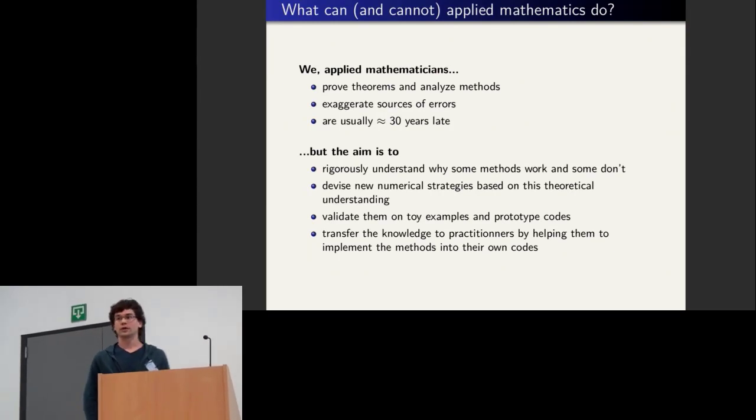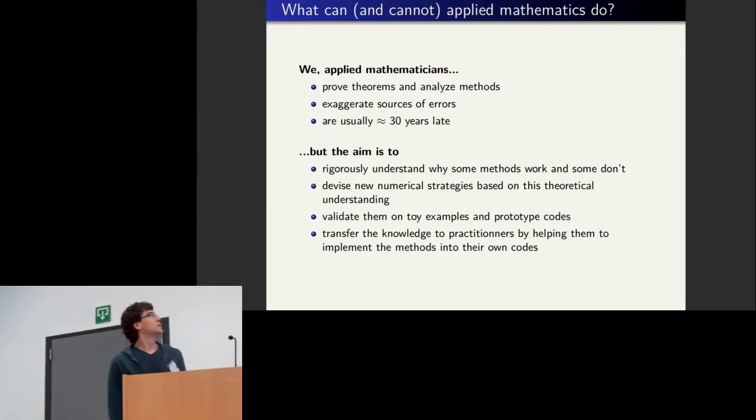So what can we and cannot we do as mathematicians? What we do is we prove theorems about numerical methods and models, and to do that we have to exaggerate sources of errors. We have to pick one particular kind of error and say this is the dominant contribution, even if it might not be actually relevant for applications. But we have to start somewhere, and it also means that we are usually 30 years late. What I'm going to present is basically stuff that has been worked out in the physical community in the 80s and 90s.